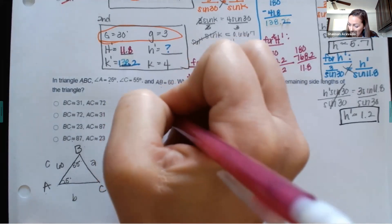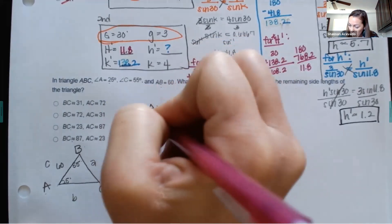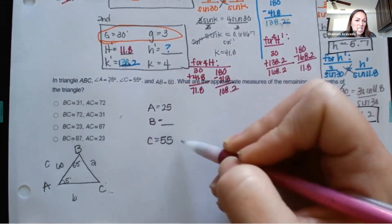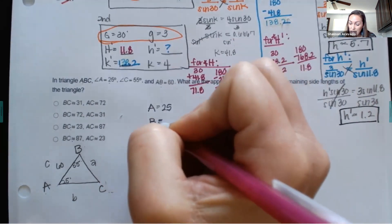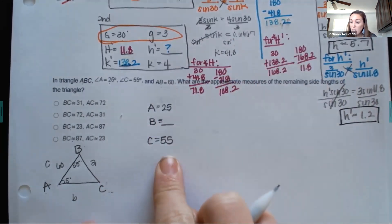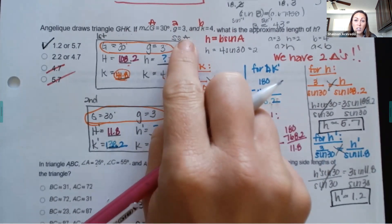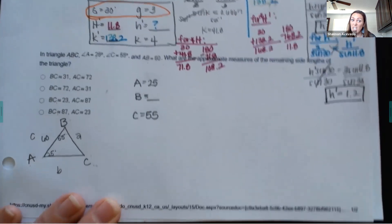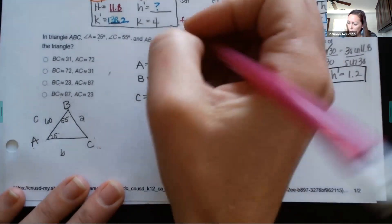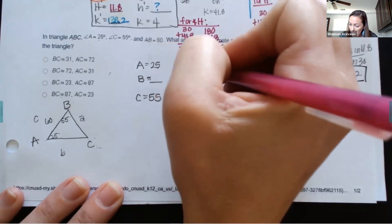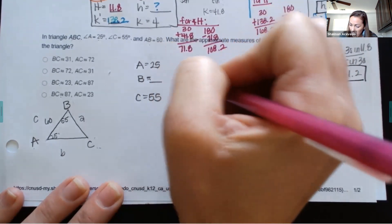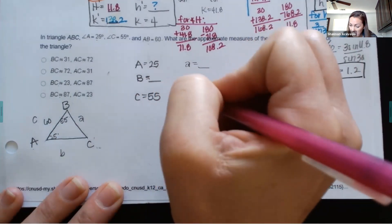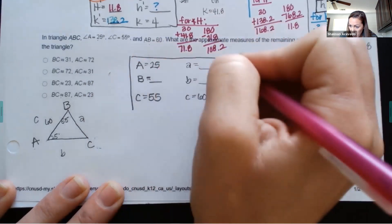So it says triangle ABC with angle A is 25 degrees, angle C is 55 degrees, and segment AB is 60. So from A to B is 60. It asks: what are the appropriate measures of the remaining sides? Side BC is the corresponding value of side a, side AC is side b, and side AB is side c — that's 60. Drawing a visual really helps you label which letters go where.